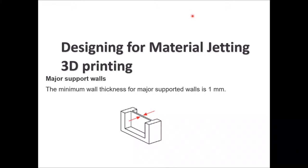One of the first precautions while designing for material jetting — similar to precautions for other 3D printing types with minor deviation — is wall thickness. If you are designing major supported walls, you want to ensure that the minimum wall thickness is 1 millimeter or higher. This will help avoid any failed print or future failure during usage of the part.